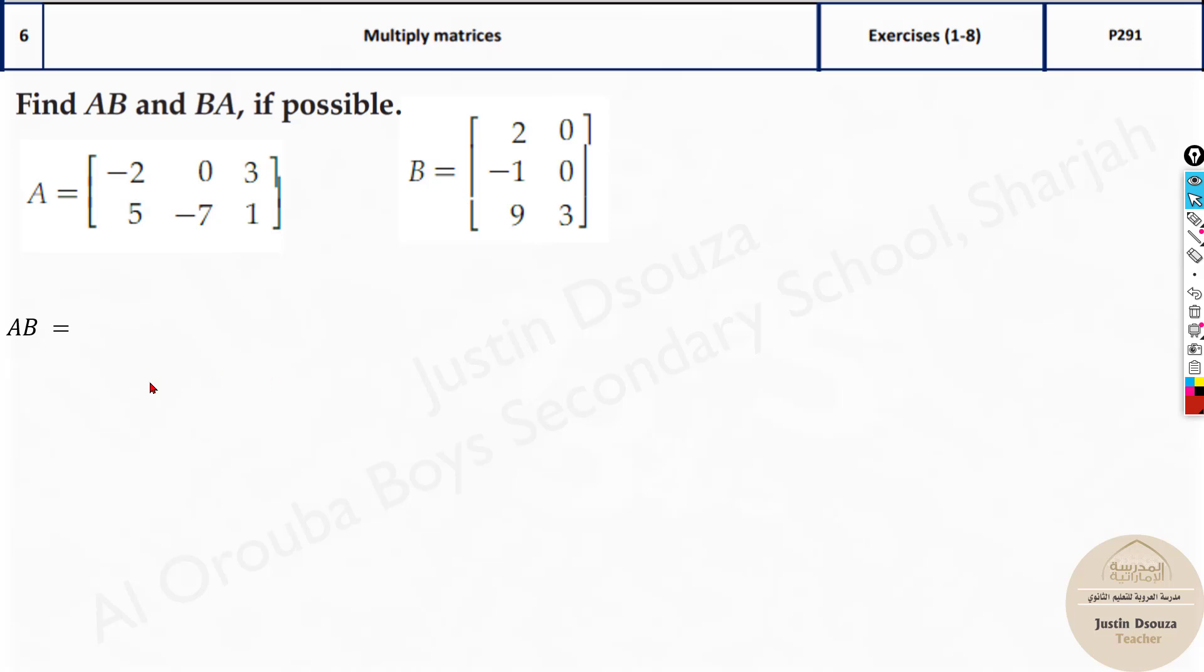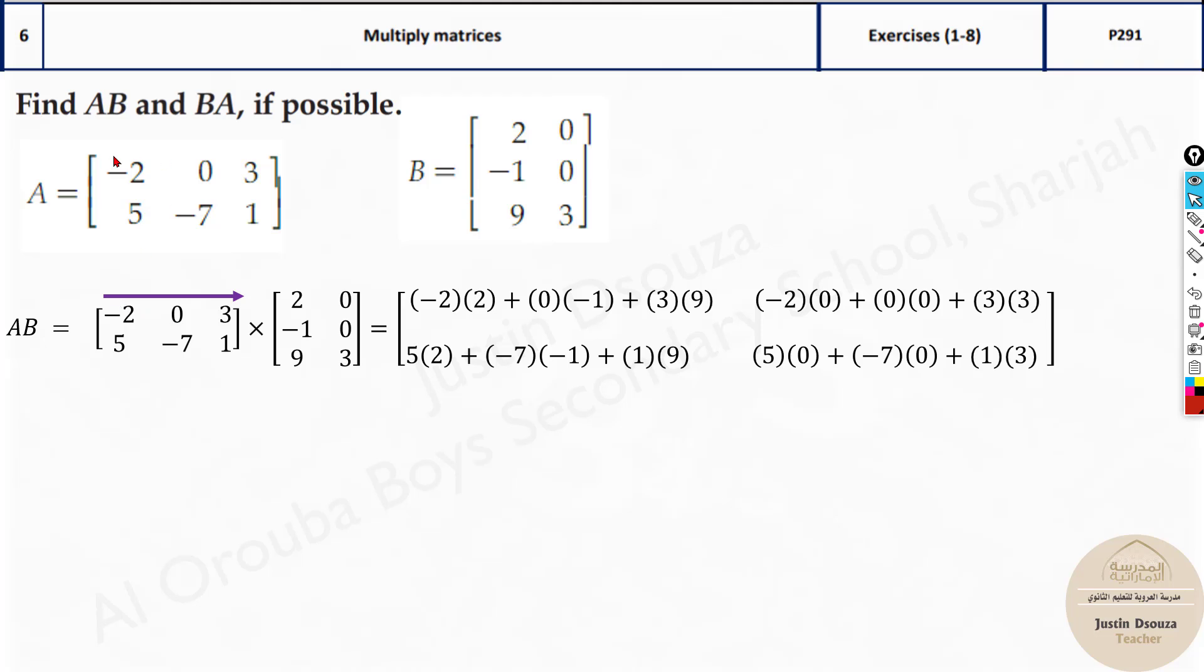Now the actual method to multiply is here. What happens is the first row is multiplied with this first column, and then you write it out from the tail to the tail, in the sense this term over here with this term. Can you see over here? Minus 2 times 2 here, and then 0 times minus 1, and lastly 3 times 9. That is what we do, and then you write it over here. And then the first row with the second column, and that is written over here. And then with the second row, first column over here, and this one with the second row over here. You can see the tail with the tail.